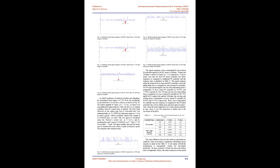The speed responses when commanded for fuzzy-based PI controller applied to BLDC motor at 500 RPM, 750 RPM, and 1000 RPM are shown in Figs. 21–23, respectively. The fuzzy PI-based controller has better responses compared to traditional PI controller, and the response times are tabulated in Table V. For 500 RPM, the rise time and settling time improvement is 98.35% and 77.50%, respectively. For 750 RPM, the rise time and settling time improvement is 98.375% and 84.84%, respectively.